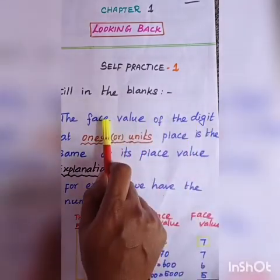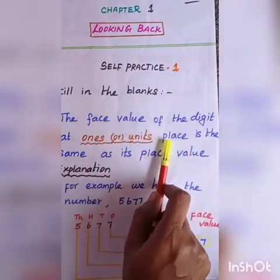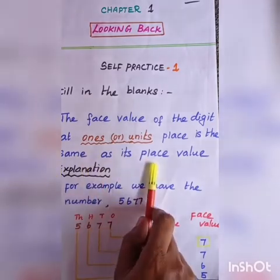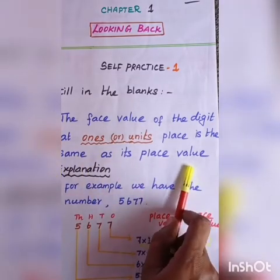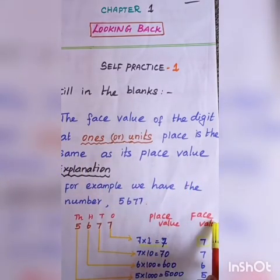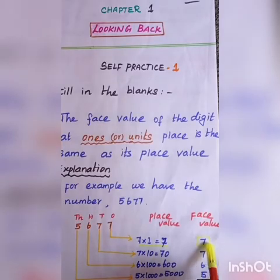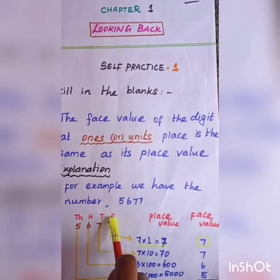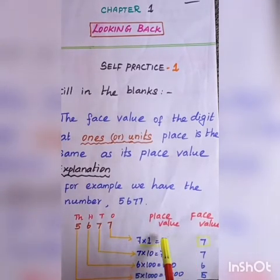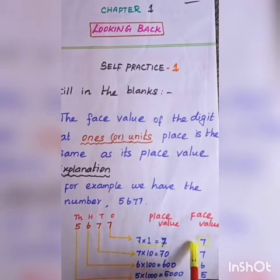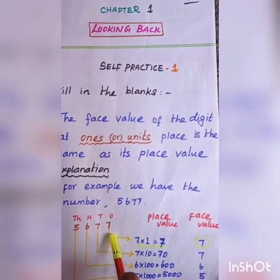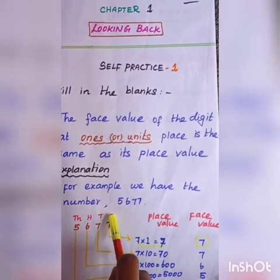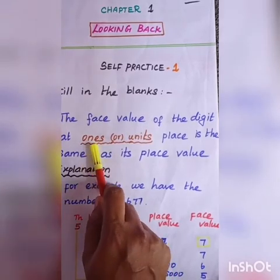Face value of the digit: one digit, one face value. When the digit is in the ones place, the place value and face value are the same. First one: 7 — place value is 7, since it's in the ones place.